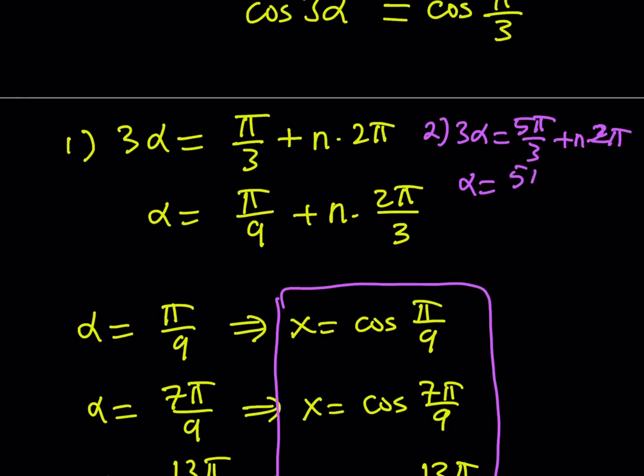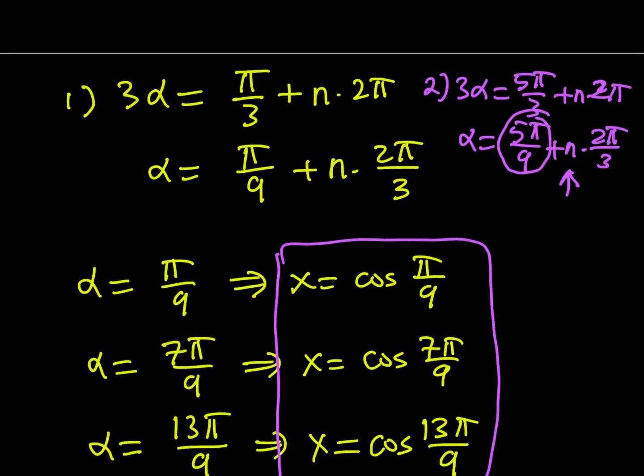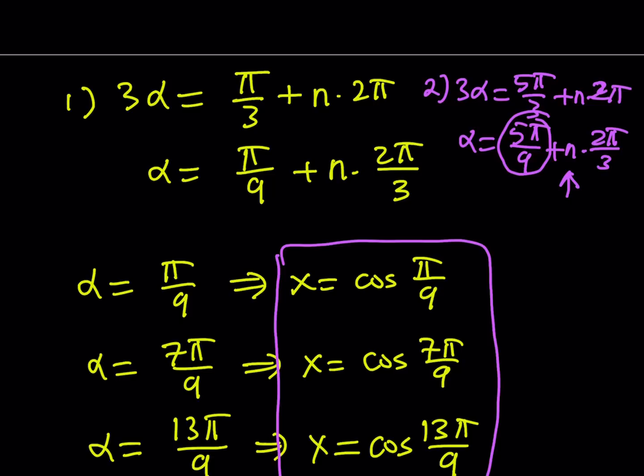When you do that, let me tell you something. To save some time, you're going to be getting the exact same values. Why? Because when you find the cosine of all these angles that arise from this equation, you're going to get basically the same cosine value. You're basically hitting the same values because obviously a cubic, a polynomial cubic, cannot have more than three solutions.